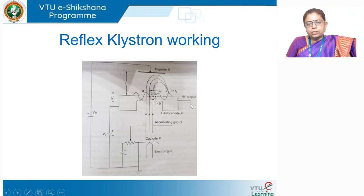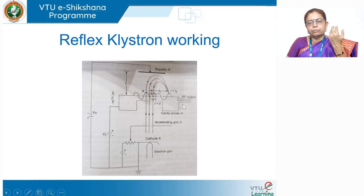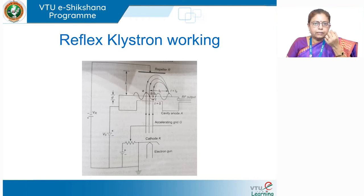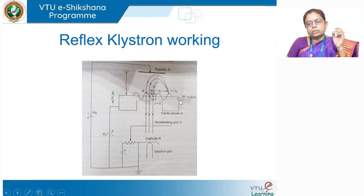In the output cavity — the re-entrant cavity — there is a small portion indicated as RF output to tap the oscillations out. We need to take the generated signal out of the tube. There is a small coaxial cable — like a TV cable with a center conductor and an outer conductor — where the center conductor is connected to the cavity wall, and through that the generated oscillations are tapped out.